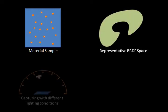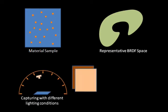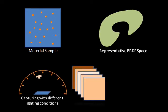The first captures the BRDF manifold as a set of representative BRDFs at scattered points over the surface. The second captures a set of reflectance images of the entire sample lit by a varying source.